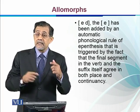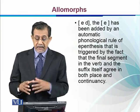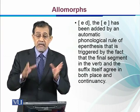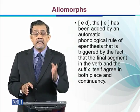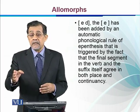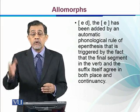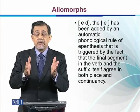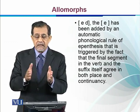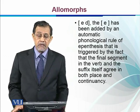If we look at the ED allomorph, it involves an addition — sometimes it's pronounced with a schwa sound. This sound has been added by an automatic phonological rule of epenthesis. Epenthesis is the insertion of phonological elements within a sound. It is triggered by the fact that the final segment in the verb and the suffix itself agree in both place and continuancy — for example, in 'started', the stem-final sound T and the consonant of the past tense morpheme D require an epenthetic vowel to be inserted between them.